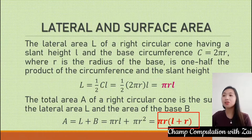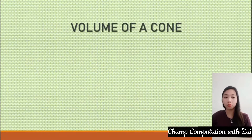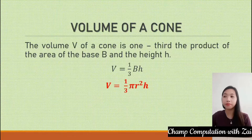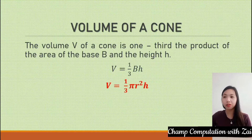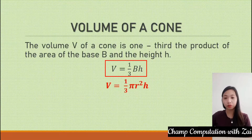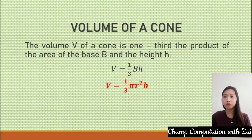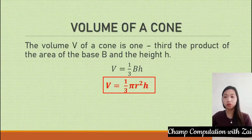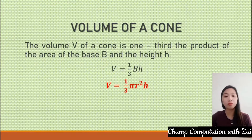Now let us go with the volume of a cone. To compute the volume, a cone's volume is one-third the product of the area of the base and the height. So we have one-third times the base area times height. Using the base formula πR², we have one-third πR²H. That is the area and volume of a cone.